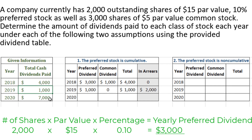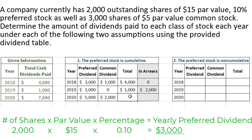In 2020, $7,000 in total dividends were paid. There's plenty of money to pay the preferred shareholders their entire $3,000, plus we can make up for the $2,000 in arrears from the previous year. So the total preferred dividend is $3,000 plus $2,000 equals $5,000. Anything left over goes to the common shareholders — after taking $5,000 away from $7,000, we have $2,000 remaining for common. The total is $5,000 plus $2,000 equals $7,000, and we have $0 in arrears.